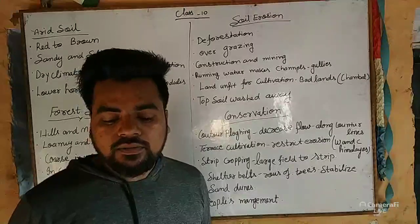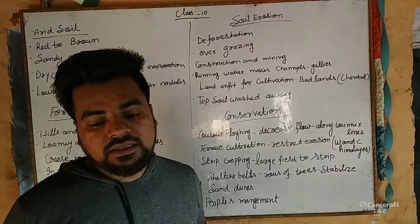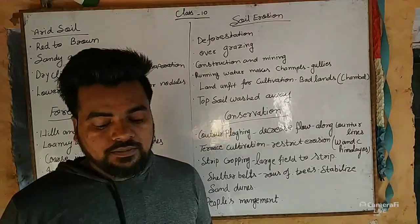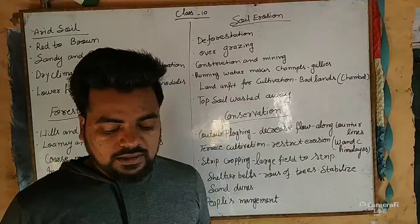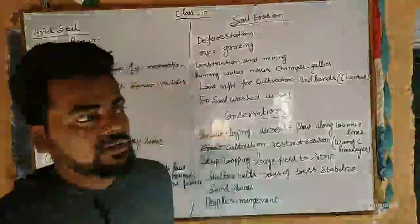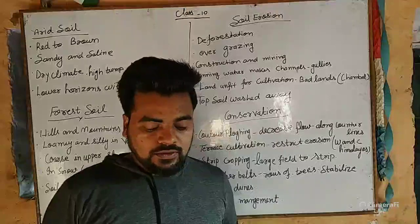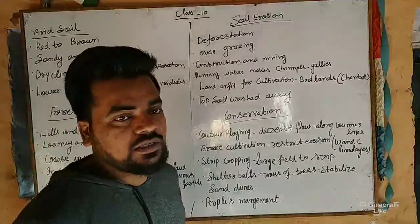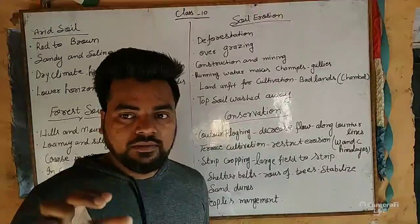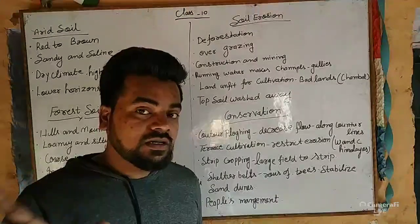Sometimes water flows as a sheet over a large area down a slope. In such cases the top soil is washed away from one place to another. This process is known as sheet erosion.